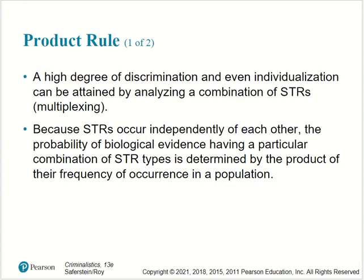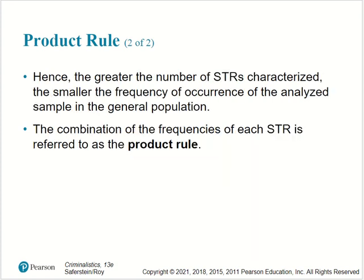The product rule: a high degree of discrimination and even individualization can be attained by analyzing a combination of STR multiplexing. Because STRs occur independently of each other, the probability of biological evidence having a particular combination of STR types is determined by the product of their frequency of occurrence in a population. Hence, the greater the number of STRs characterized, the smaller the frequency of occurrence of the analyzed sample in the general population. This combination of frequencies is referred to as the product rule.